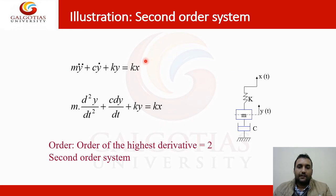Second order system. If the m double derivative of y plus c single derivative of y plus ky is equal to kx. As the highest derivative is equal to 2, this is the second order system.